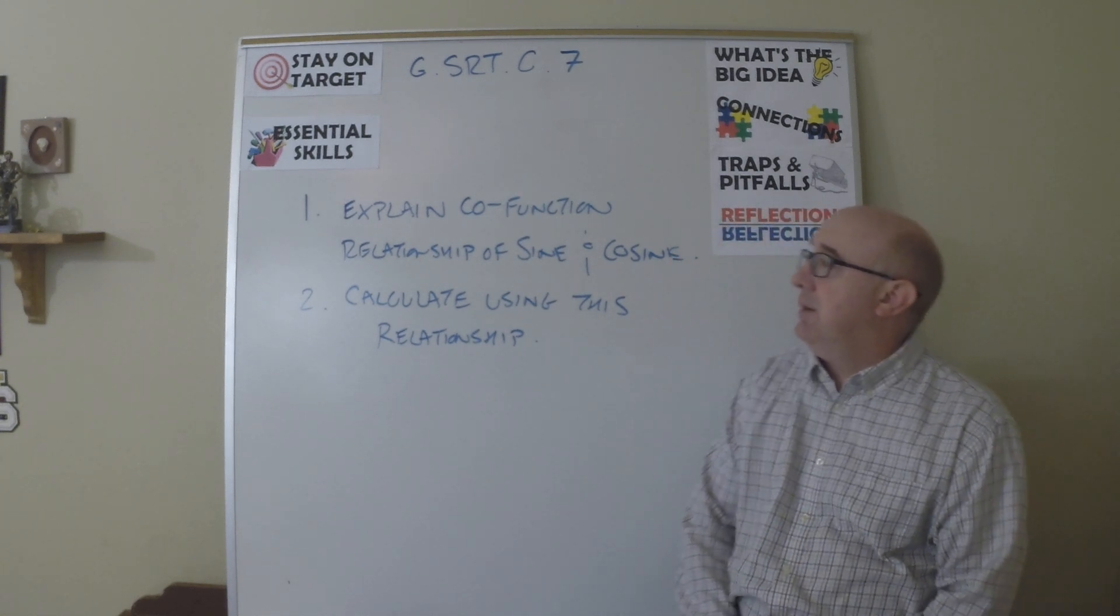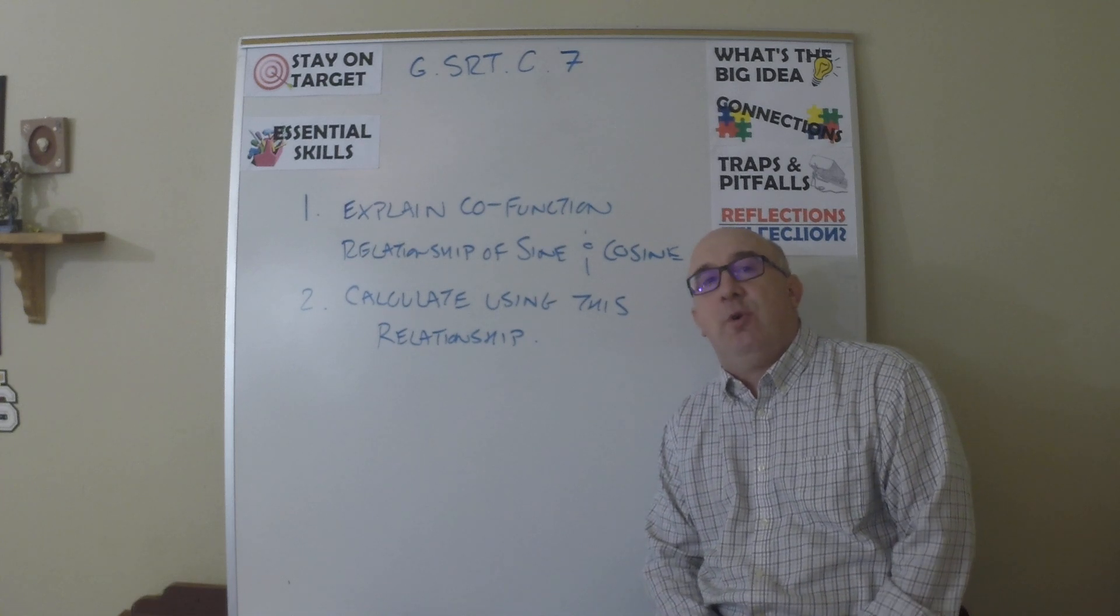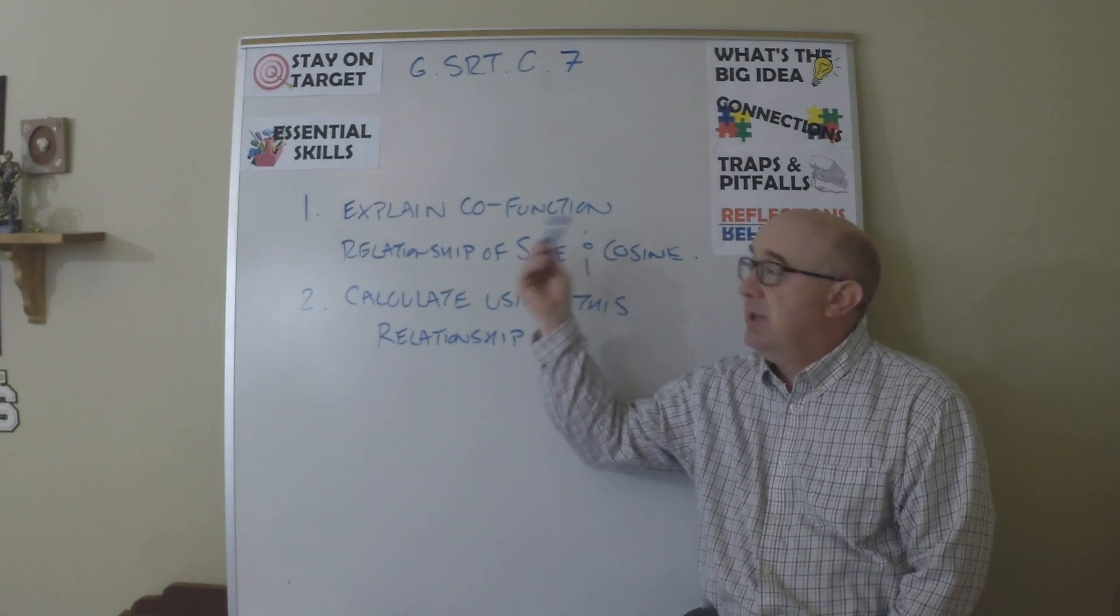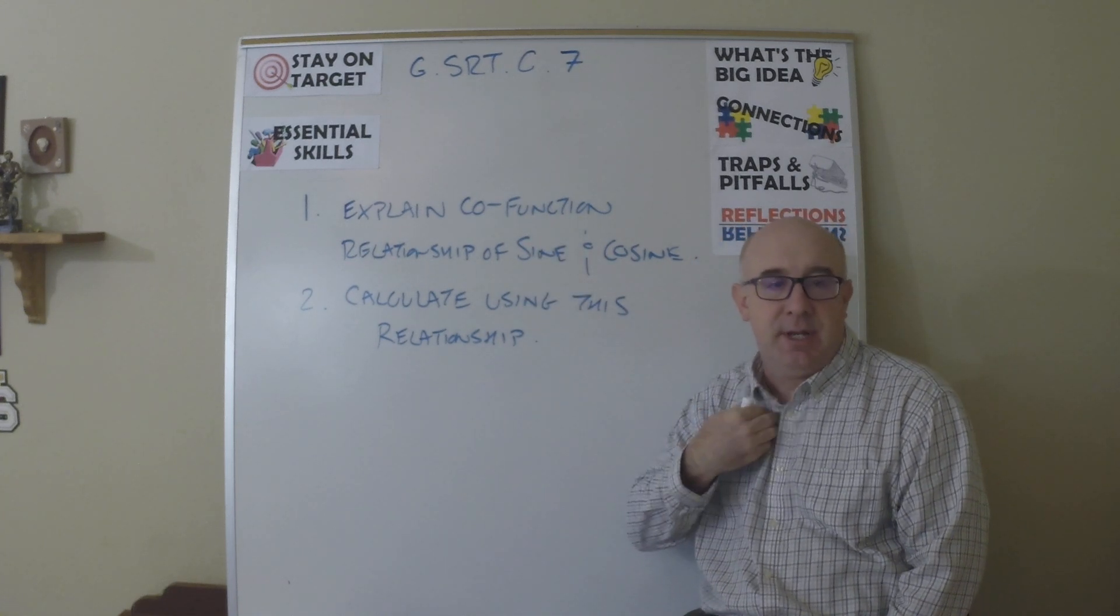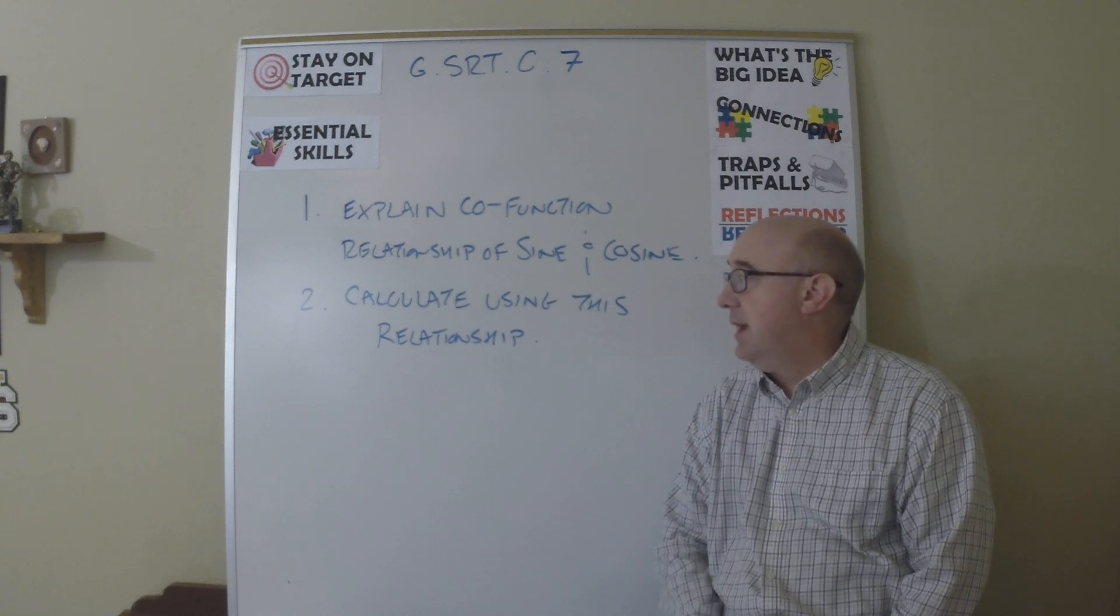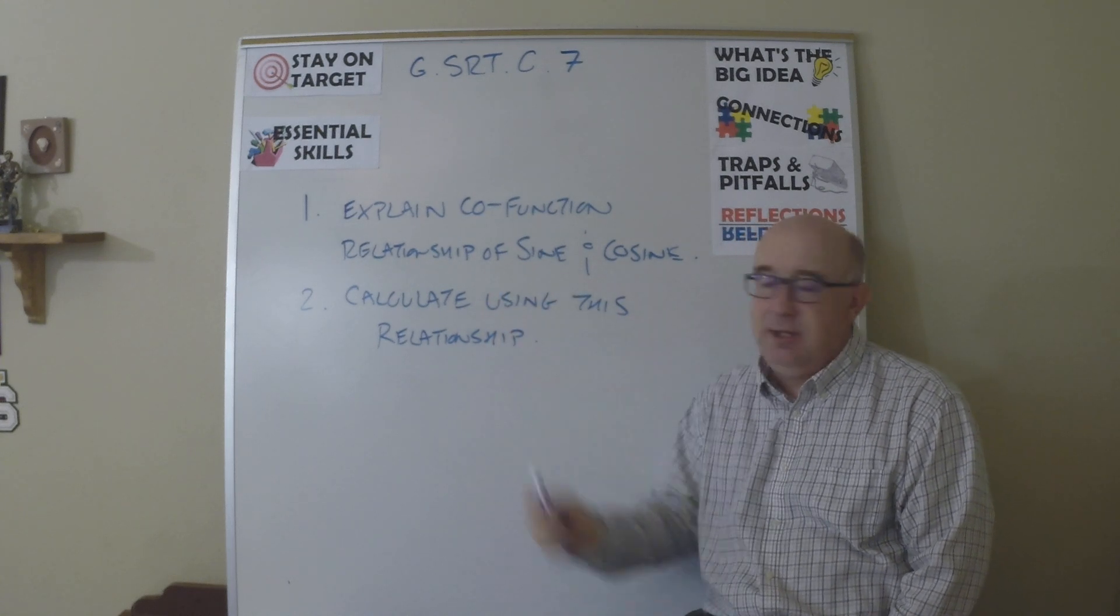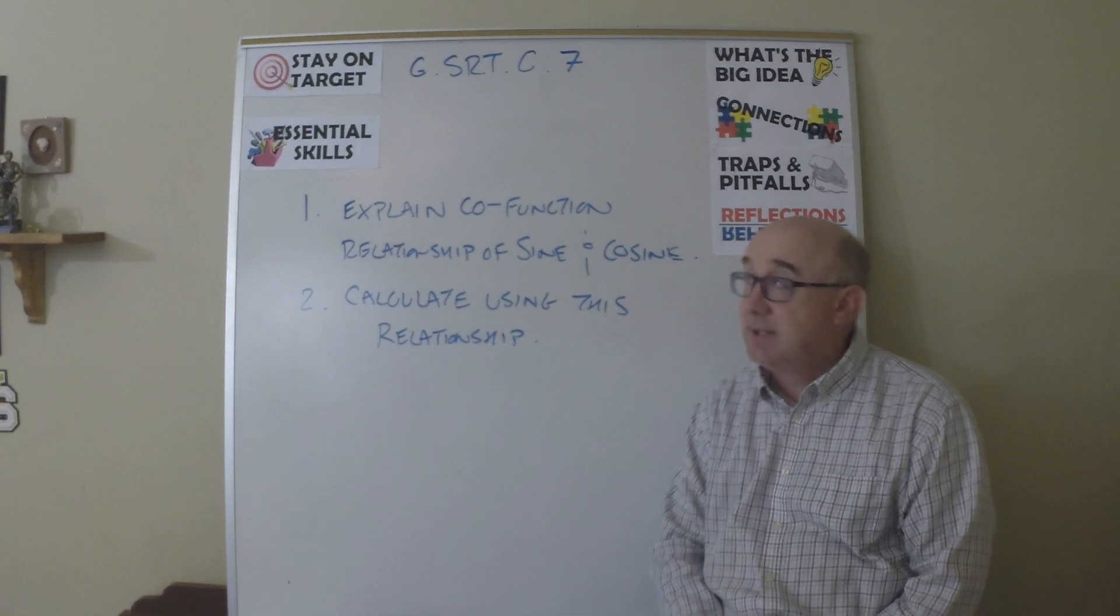So really, sometimes that term is called a co-function, a relationship between two different functions of sine and cosine. We're going to learn it and use it to calculate things. A very simple objective.